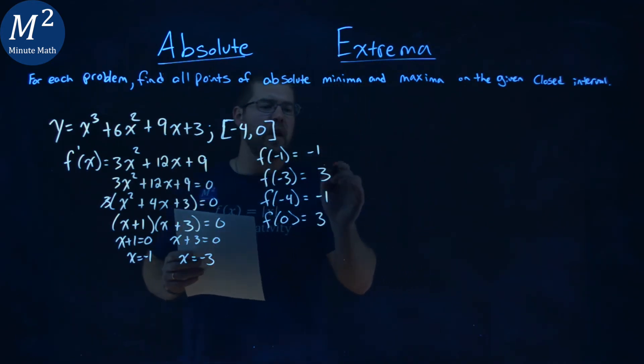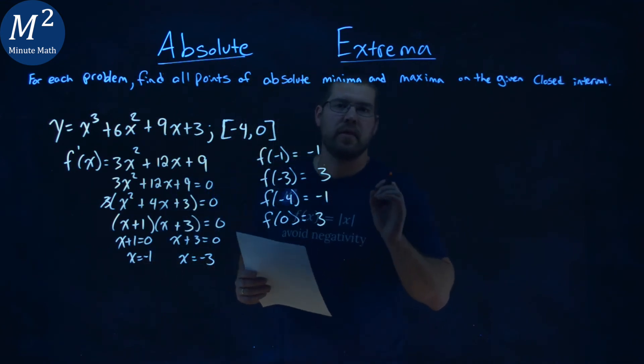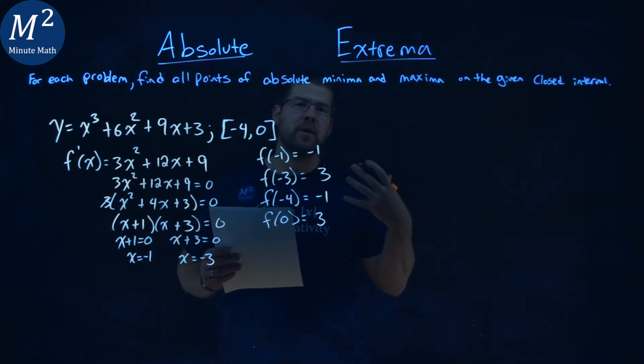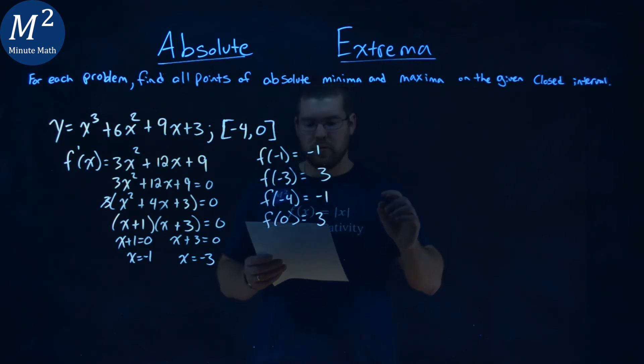Our two lowest values and our two highest values are the same. And so in this case, our absolute minimum and maximum have two answers for each.